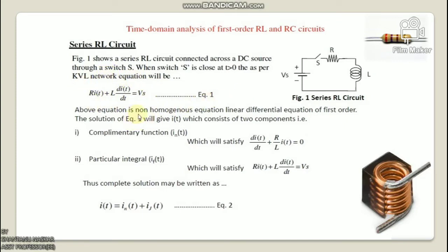The above equation is a non-homogeneous, linear differential equation of first order. The solution of equation 1 will give I(t) consisting of two components: number one, the complementary function I_N(t), which satisfies dI/dt + (R/L)·I = 0; and number two, the particular integral I_F(t), which satisfies R·I(t) + L·dI/dt = Vs. The complete solution may be written as I(t) = I_N(t) + I_F(t).